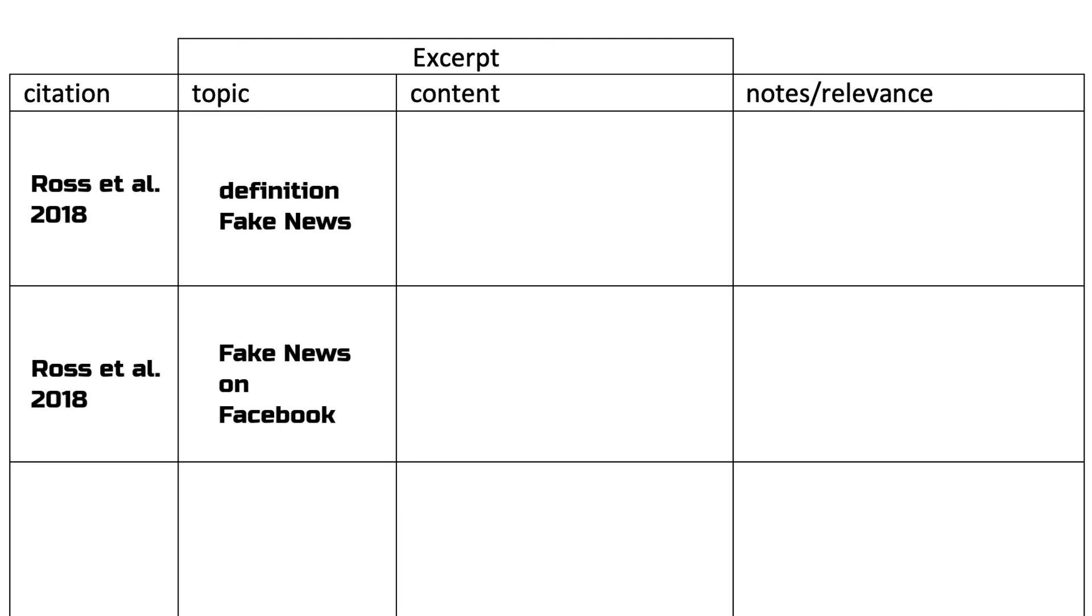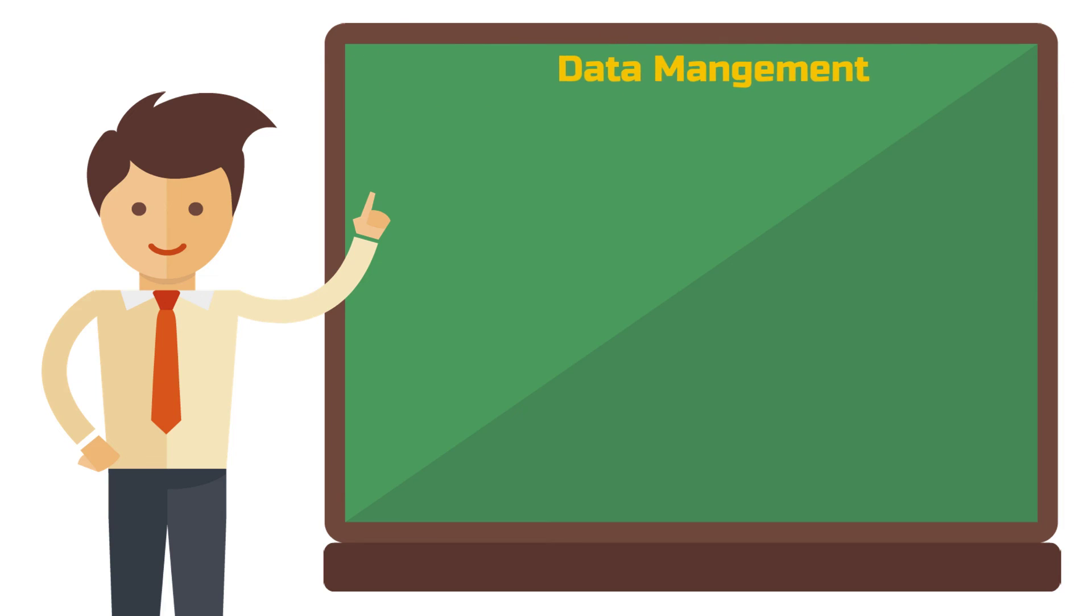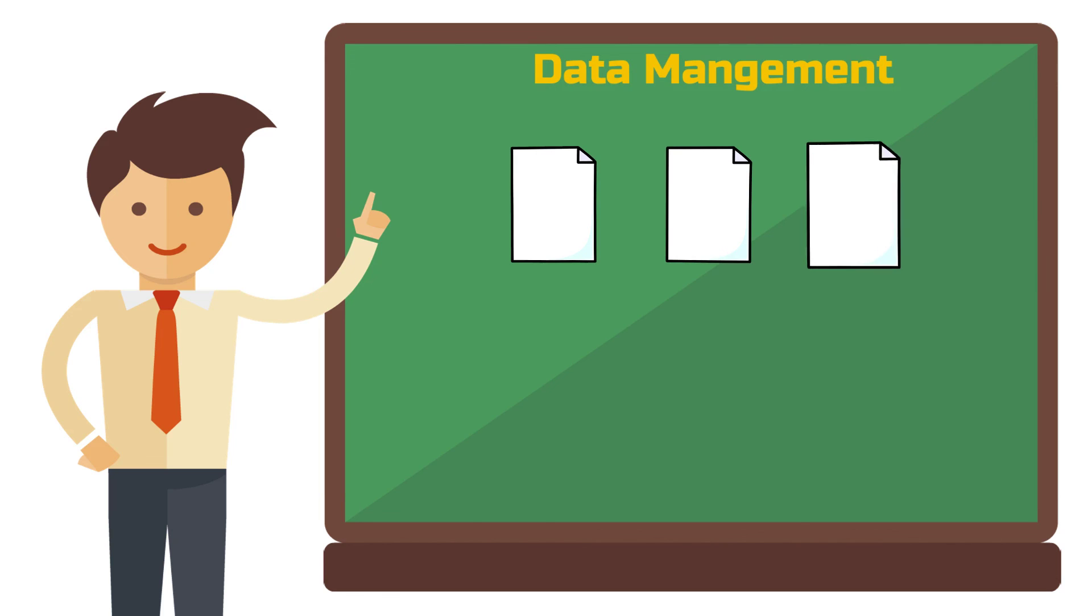If the text you are reading has served its purpose and was only helpful for the definition, for example, then start the next line in your table with a new paper or book. Here it could be about fake news definition again or something entirely different. However, in the grand scheme of things, it might make sense for you to create individual excerpt tables for different topics. If you want to go through 20, 30 or even more references, then a single table can quickly become cluttered.